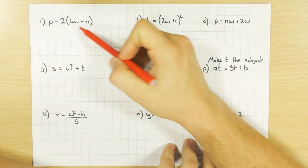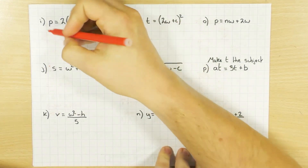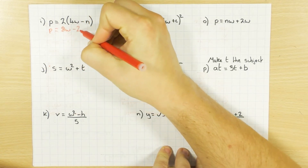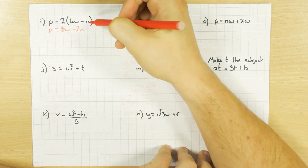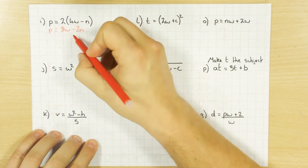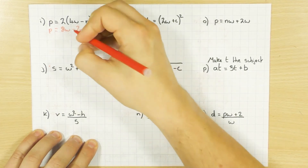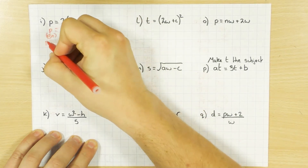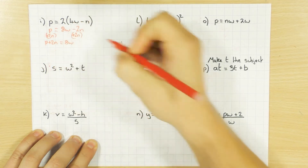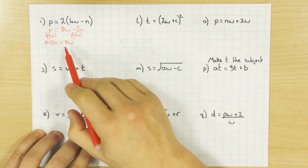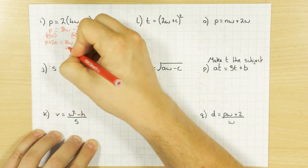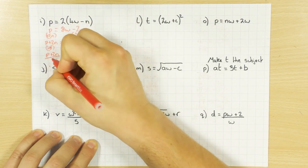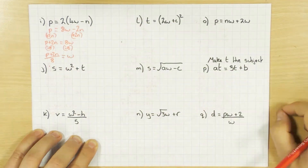When I've got a bracket, I would always expand the bracket first. So P equals 8W minus 2N. If you don't know how to expand brackets, have a look at my expanding single brackets video. There's W — I want to get rid of this minus 2N, so I do the opposite and plus 2N, giving P plus 2N equals 8W. Because it's 8W, I want to divide by 8 to get rid of that 8 — divide both sides by 8. So P plus 2N all divided by 8 equals W.